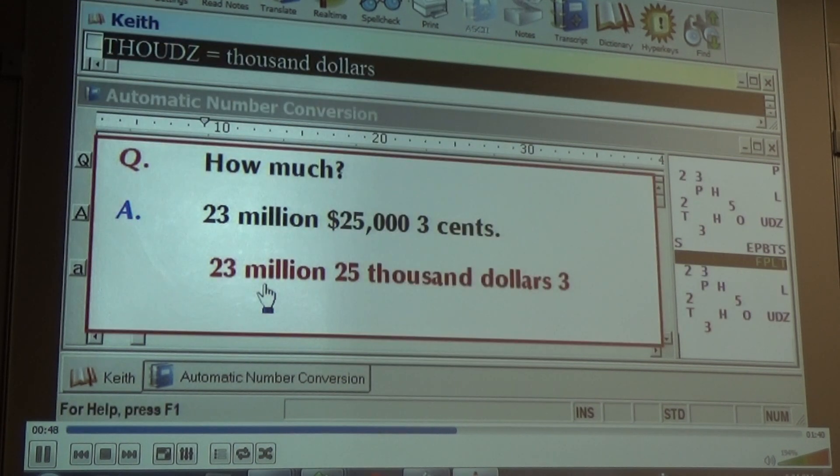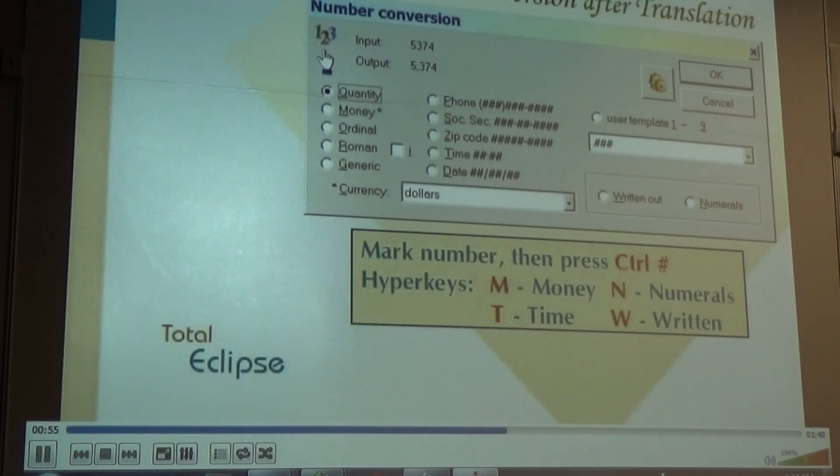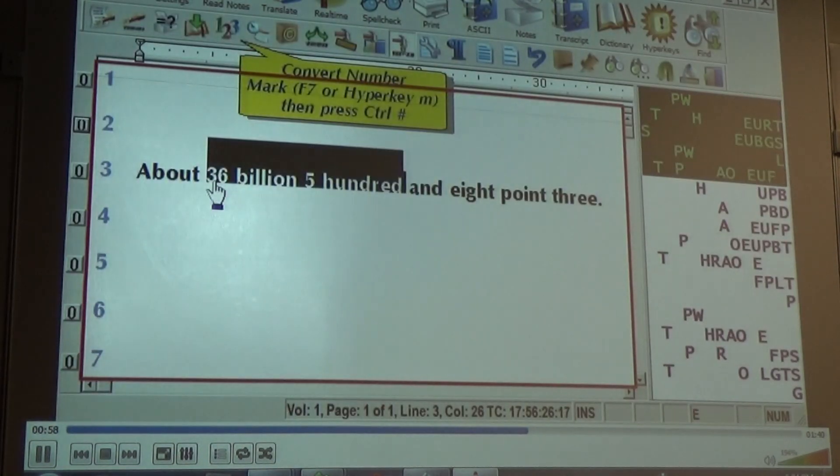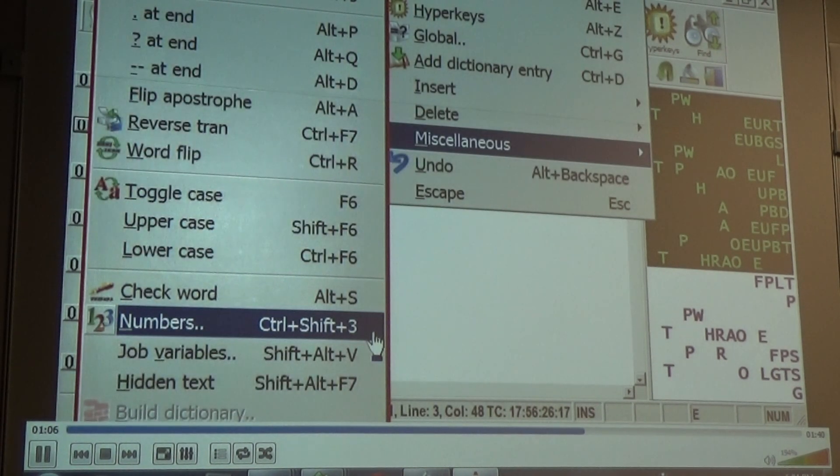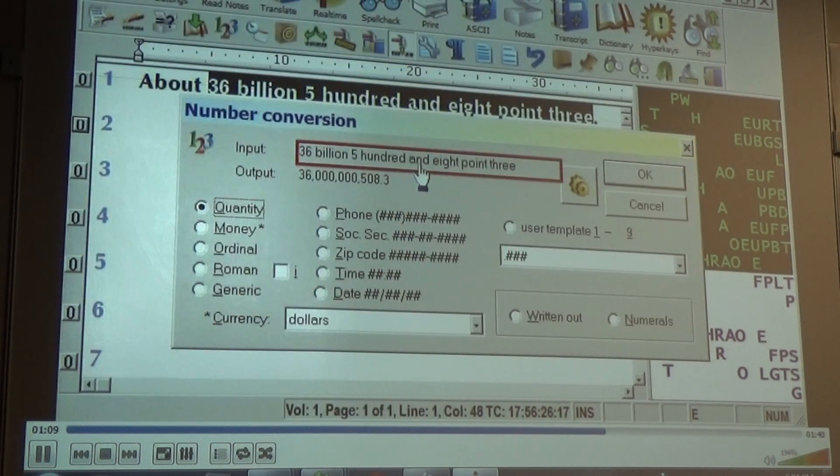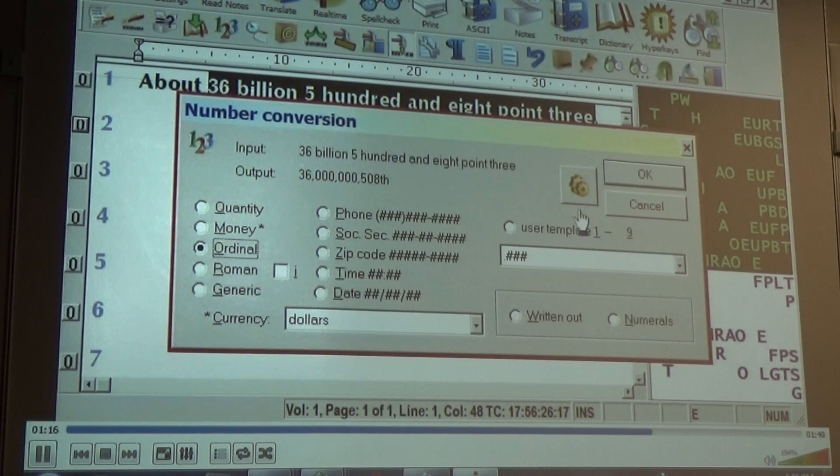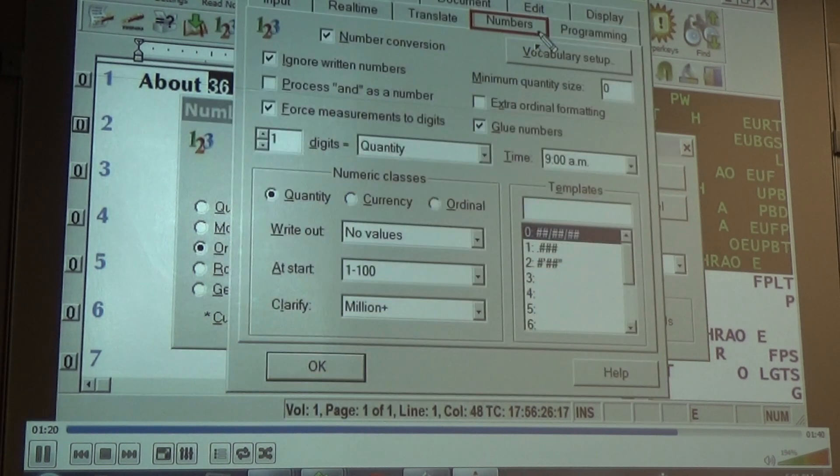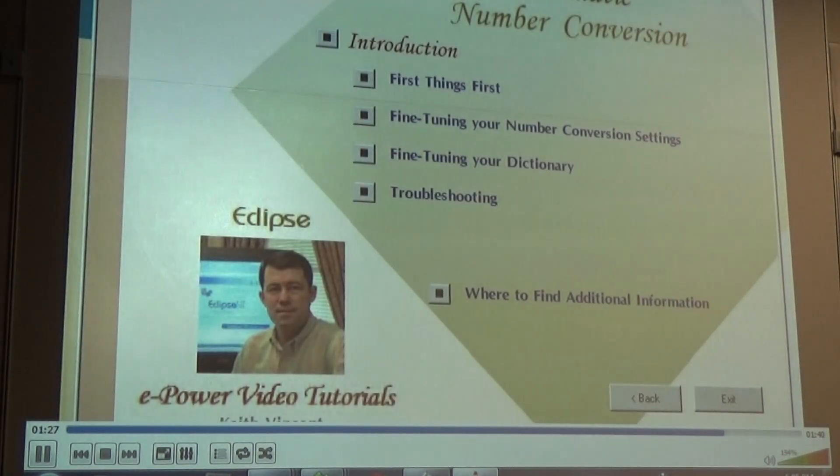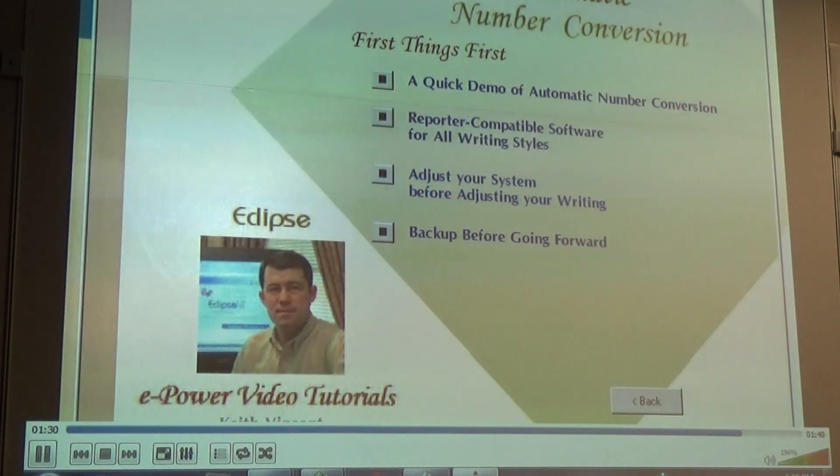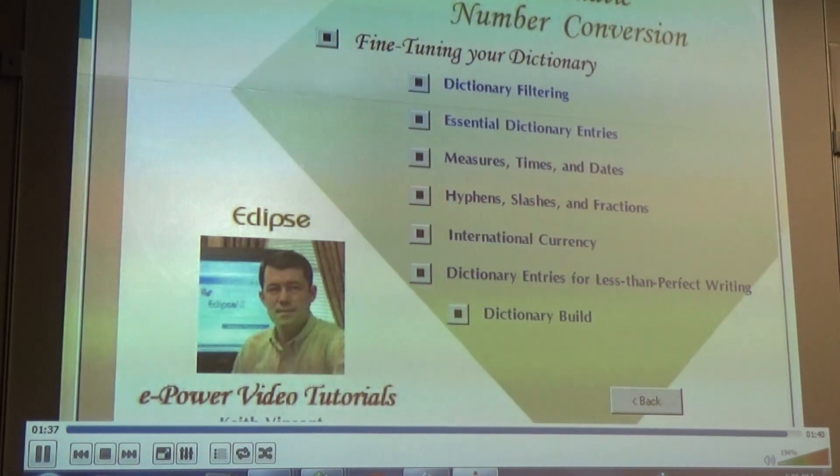A separate presentation deals with finding and moving entries in and out of your dictionary. Occasionally you'll want to convert numbers after translation. Mark the number first, then click on the toolbar icon or use the menu or the speed key, control and the pound key together. Here you see your number as it starts out and as it would look depending on which format you choose. However, your numbers settings will control, and so the gear icon takes you quickly to adjust those settings. Within these short presentations, it's not possible to show all that Eclipse automatic number conversion can do, so a separate in-depth ePower video tutorial is available on automatic number conversion.